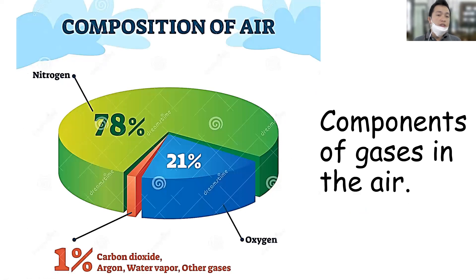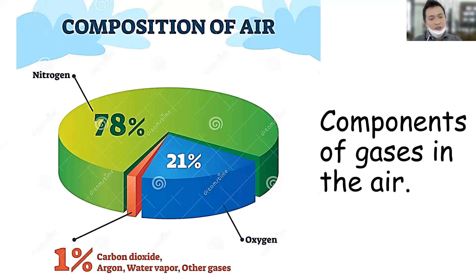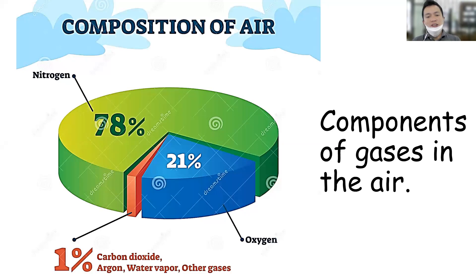What about the composition of air? We can see that the largest of all is nitrogen. What is the composition — how many percent of nitrogen? There is 78 percent nitrogen. What about the other components? There is 21 percent oxygen and only one percent which is carbon dioxide.